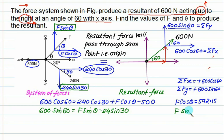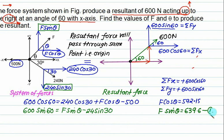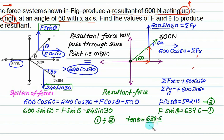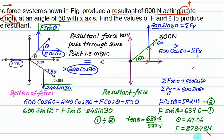Call the Fx equation as equation 1 and the Fy equation as equation 2. Dividing equation 2 by equation 1 gives tan theta equals 639.15 divided by the Fx value of approximately 592, so theta equals 47.06 degrees. Substituting this back into either equation gives F equals 337.87 N. That is the final answer.